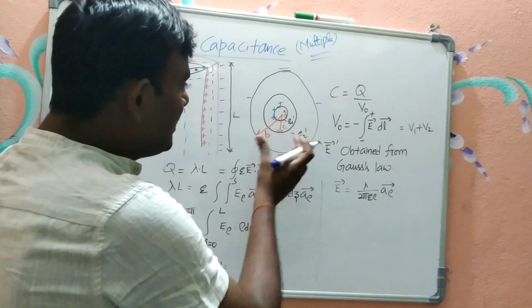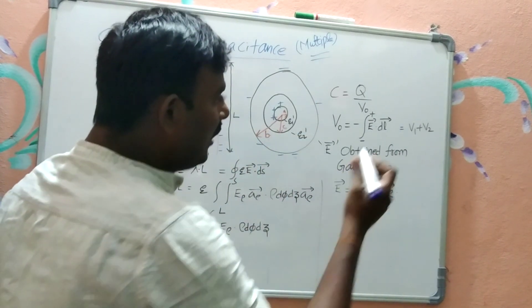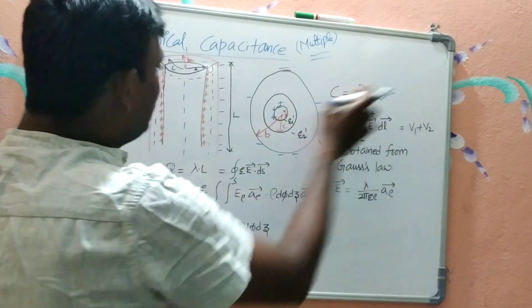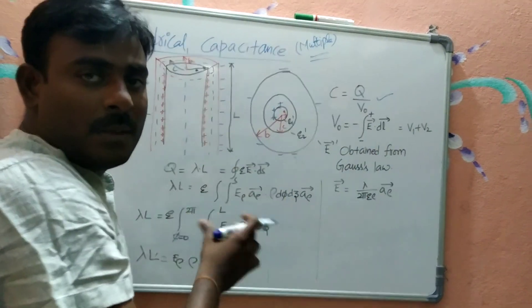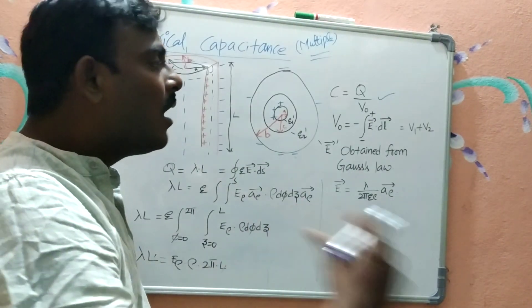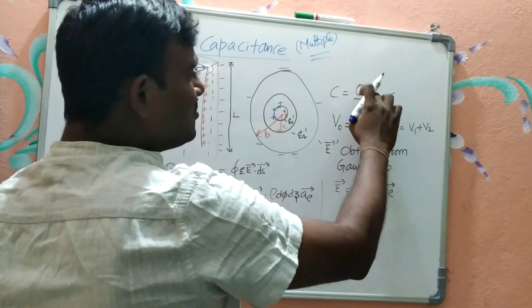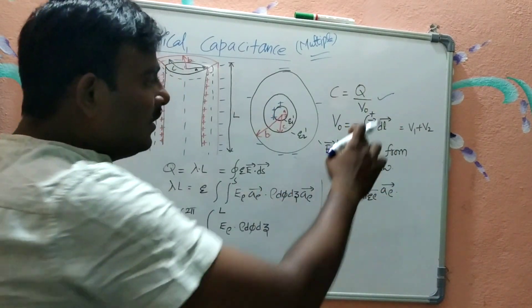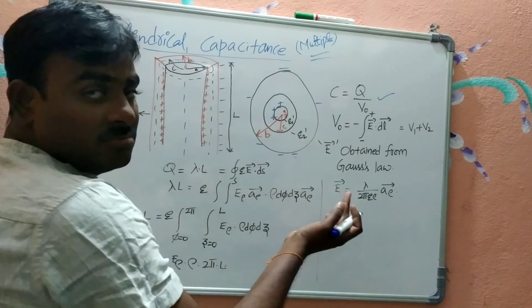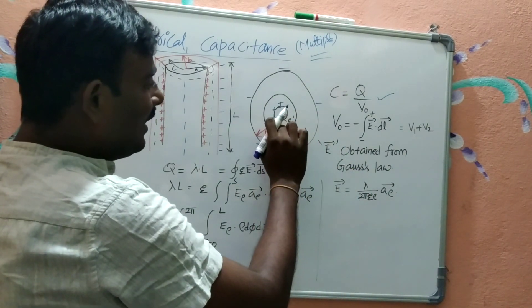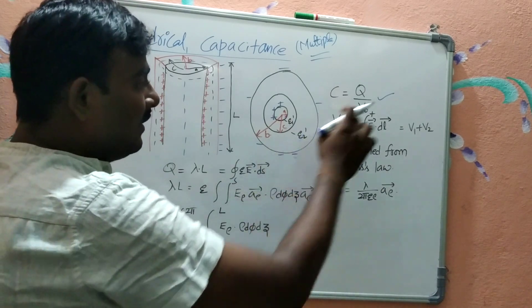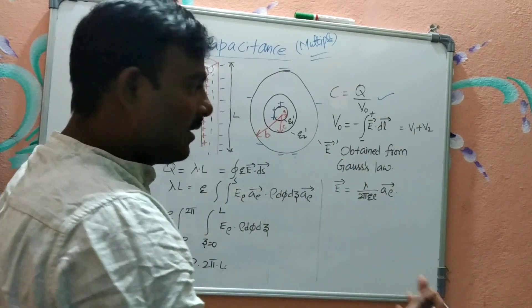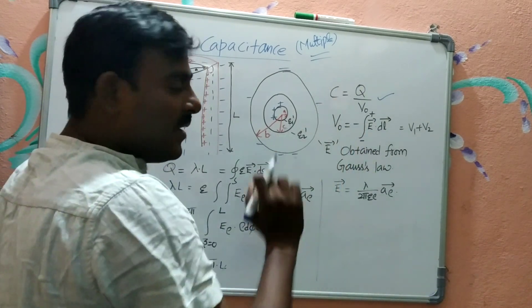Now we will see how to find the capacitance of this type of capacitor. Capacitance is given by the ratio of the charge stored on one of the conductors to the potential difference between the two conducting bodies — the inner cylindrical conductor and the outer cylindrical conductor. We need to know both the potential difference and the charge stored on either cylindrical conductor.